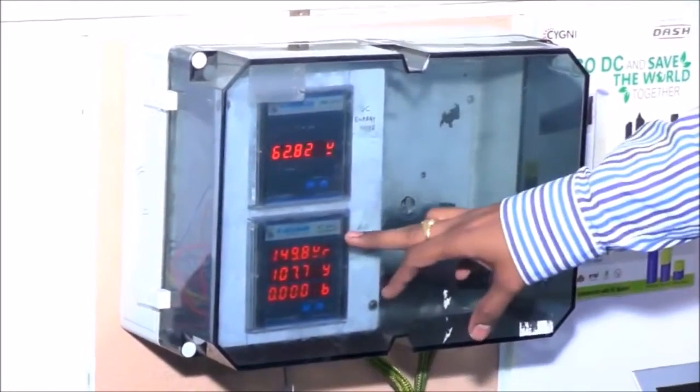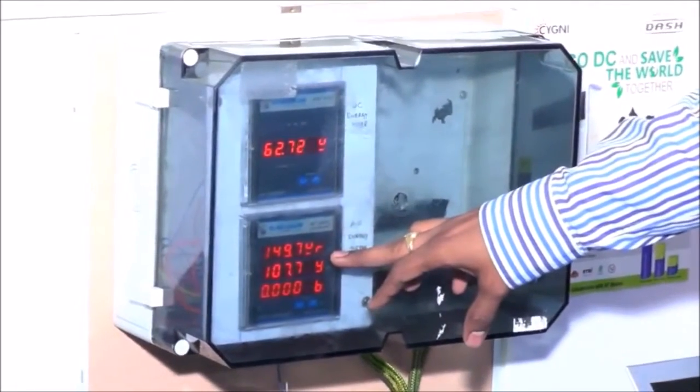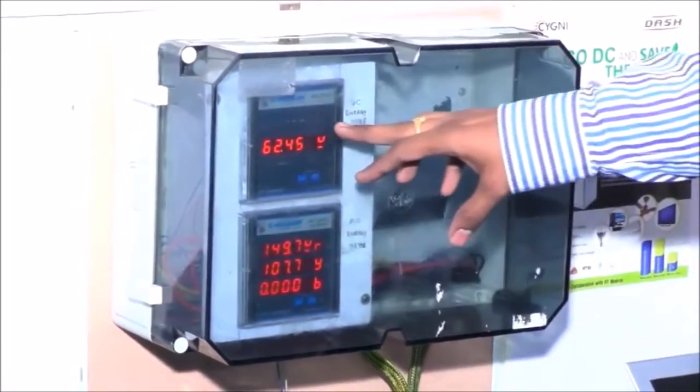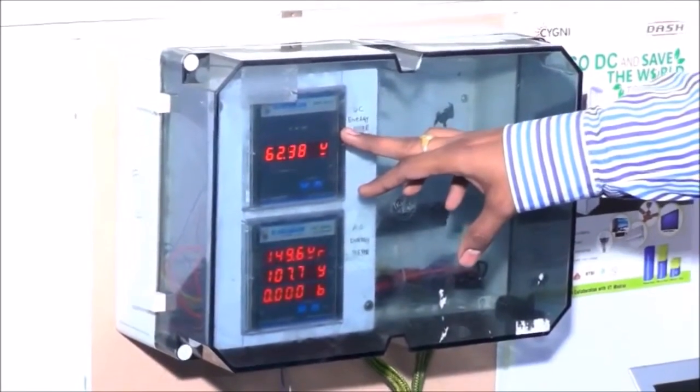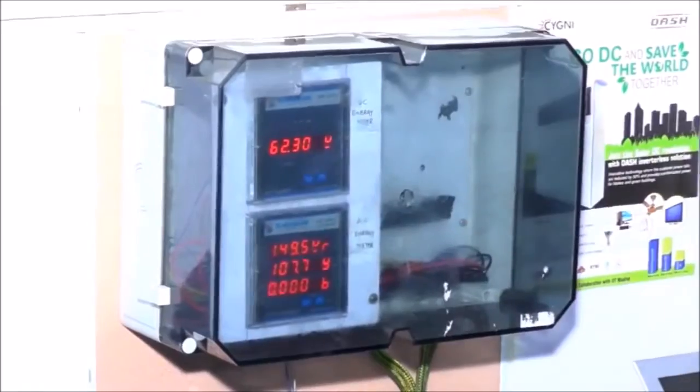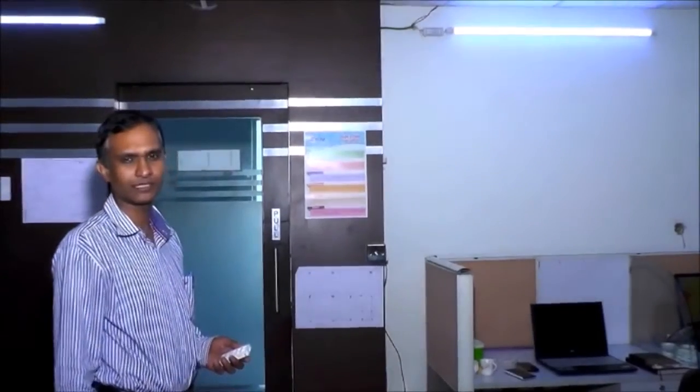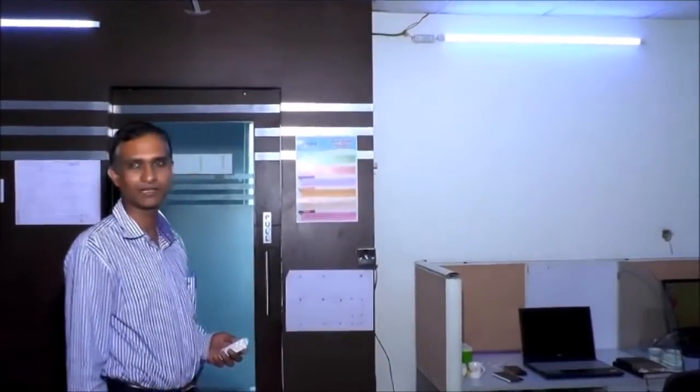Compared to the conventional AC system, the energy efficient AC system has a reduction in the power consumption. But for the same set of loads, the DC consumption is much lesser than the energy efficient AC system. Over and above the advantages that we get with the DC system and the power consumption,